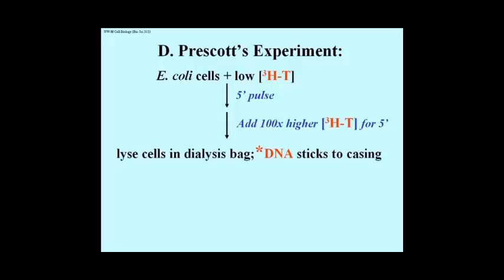The sum total exposure time was only a fraction of the E. coli generation time. The idea was that DNA synthesized in the first short time period would only be mildly or lightly radioactive, and the DNA synthesized during the second time period would be much more heavily radioactive.